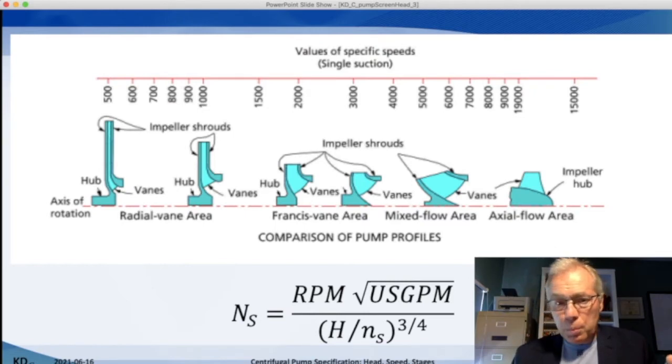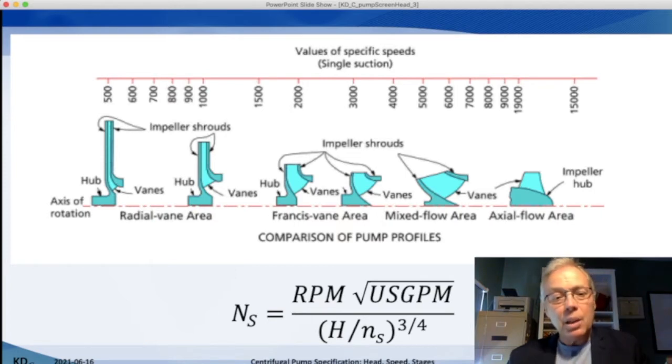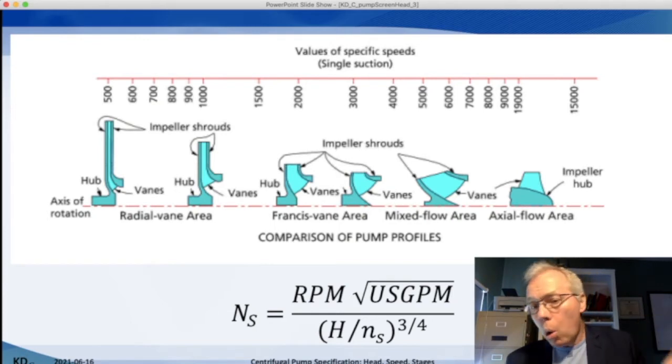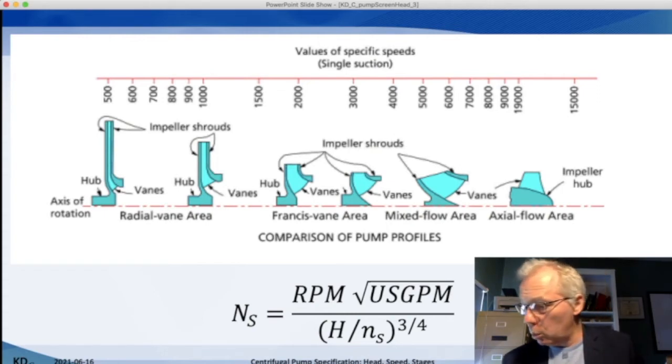Now the specific speed uses the pump speed in RPM, the square root of the flow rate in US gallons per minute, and the head developed by each stage in the pump raised to the three-quarter power. Or, we could say it's the total head generated by the pump divided by the number of stages, all raised to the three-quarter power.